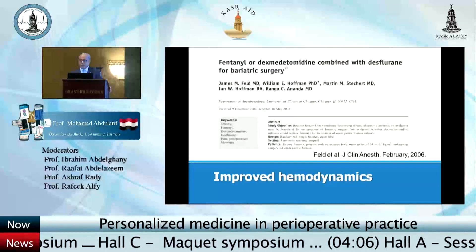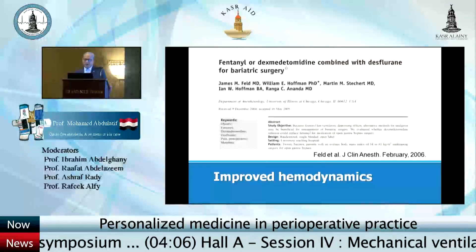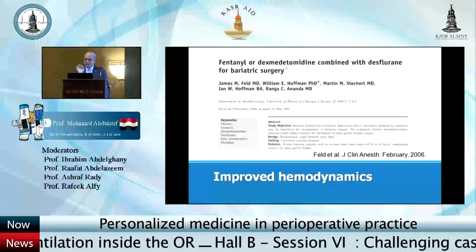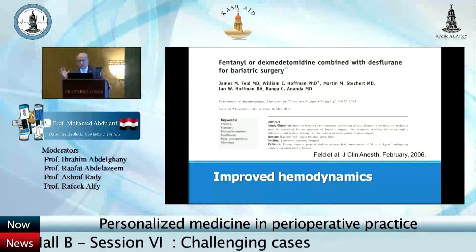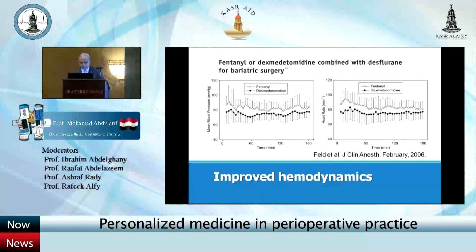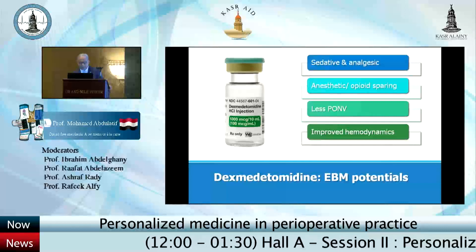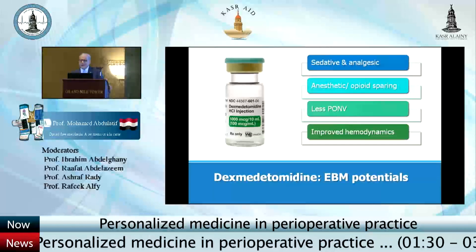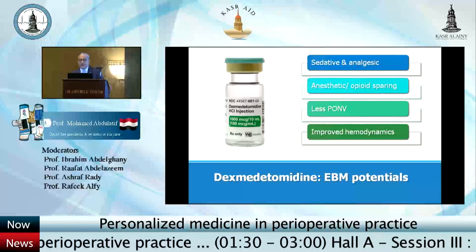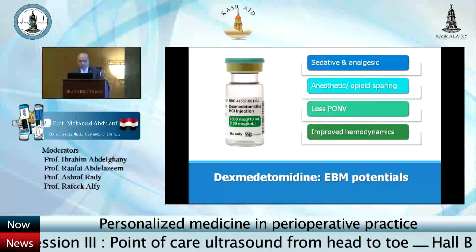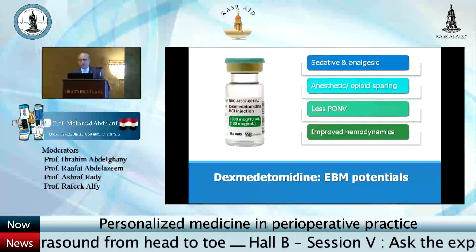Regarding hemodynamics — hemodynamic effects of laparoscopy are numerous, including hypertension and increased systemic vascular resistance. A small study compared fentanyl to dexmedetomidine as analgesic for obese patients undergoing bariatric surgery. Blood pressure and heart rate were lower, as expected, with the alpha-2 agonist. Based on strong evidence from systematic reviews and RCTs, we can reliably say dexmedetomidine has sedative and analgesic effects, anesthetic and opioid-sparing effects, is associated with less postoperative nausea and vomiting, and has an improved hemodynamic profile during laparoscopic surgery.